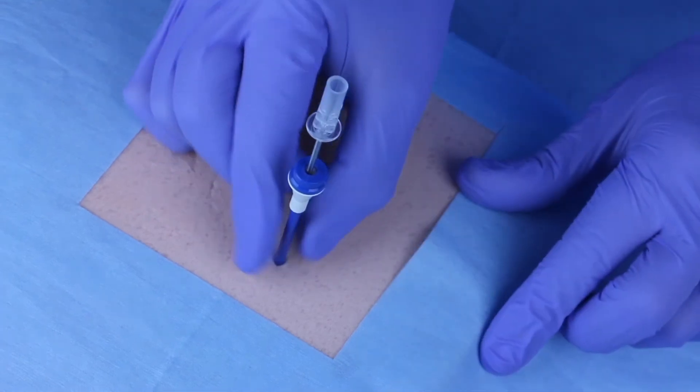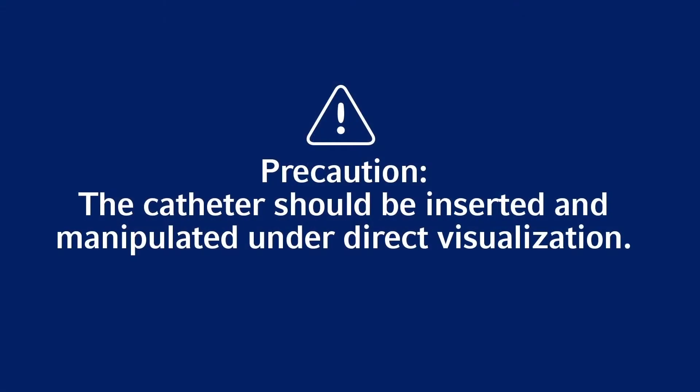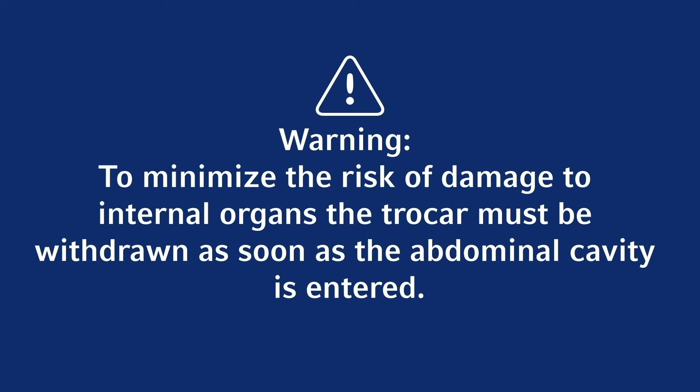Hold guide catheter in place and withdraw trocar sufficiently to cover tip. Precaution: the catheter should be inserted and manipulated under direct visualization. Warning: to minimize the risk of damage to internal organs, the trocar must be withdrawn as soon as the abdominal cavity is entered.